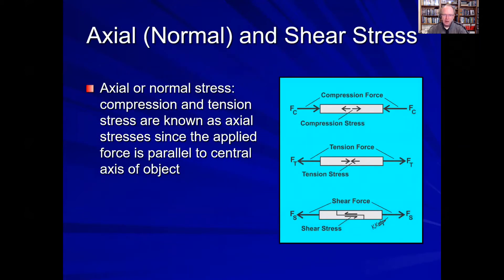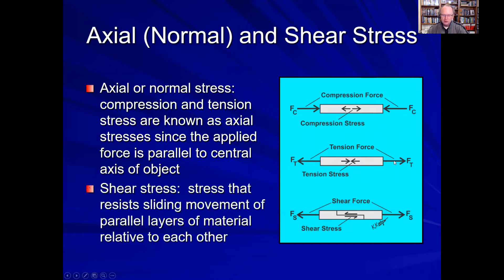There are two main types of stress. There are axial stresses. Typical types of axial stresses are compression stress, where the compression force is acting along the long axis of the object. Another type of axial force is tension stress, where a tension force tending to pull or elongate the object is parallel to the long axis of the object. Shear stress, however, is that stress that resists the sliding movement of the parallel layers of the material, where the two layers are tending to resist being pulled apart — that is its internal resistance to deformation.